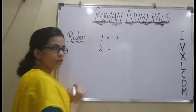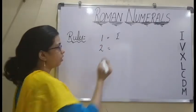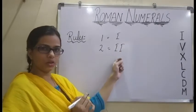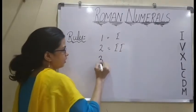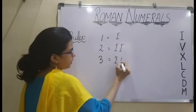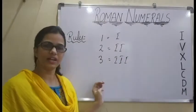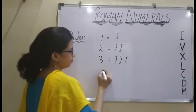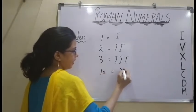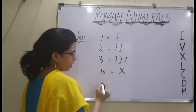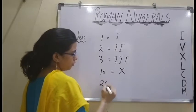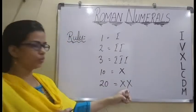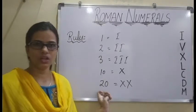So how do we write 2 in Roman numeral? We will be repeating I twice. Similarly for 3, we will be repeating I thrice. Let us consider another example. For 10, we have X. So for 20, what do we do? We will be repeating X twice. So we get X and X for 20.